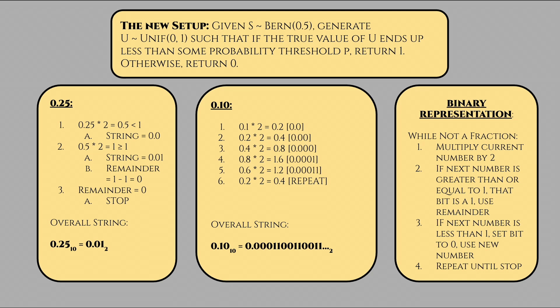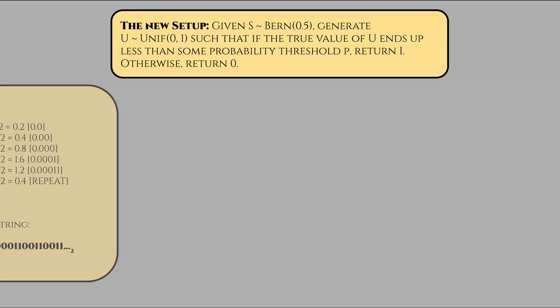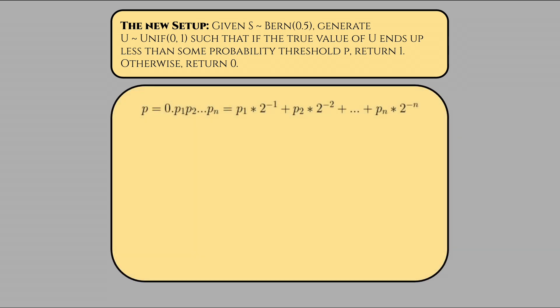We should write our probability threshold of success in binary notation. Then, we can flip our simulated fair coin n times, where n is the number of unique bits in the binary expression of p, our threshold. Lastly, we want to somehow compare the outcome of the coin, heads being a 1 and tails being a 0, with the corresponding bit value in base 2 representation of p. Defining some notation, suppose we have n flips. We can represent p in its binary representation as p equals 0.p1, p2, p3, etc. to pn, where there are n digits. This is equal to p1 times 2 to the power of negative 1, plus p sub 2 times 2 to the power of negative 2, plus etc. all the way to p sub n times 2 to the power of negative n, where p sub i must be either a 0 or a 1 for all values of i equals 1 to n.